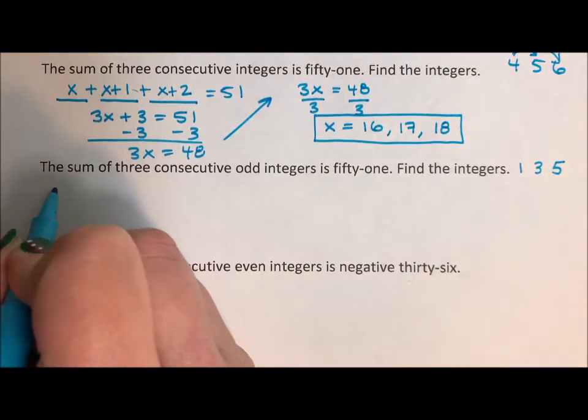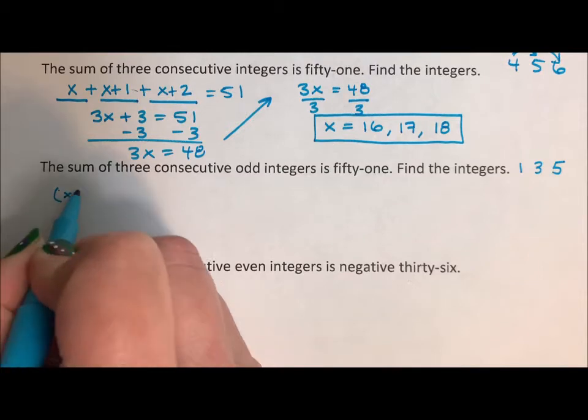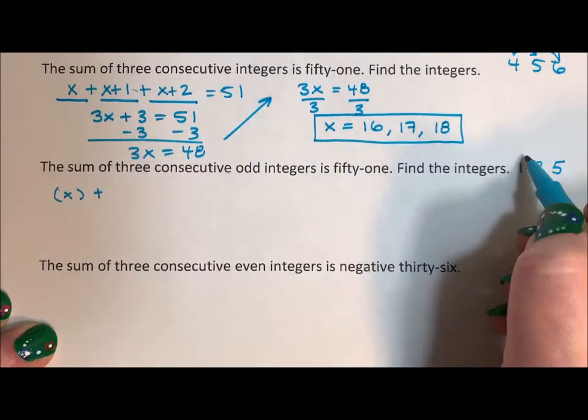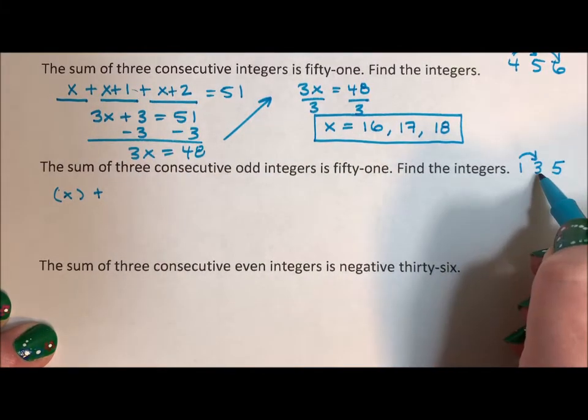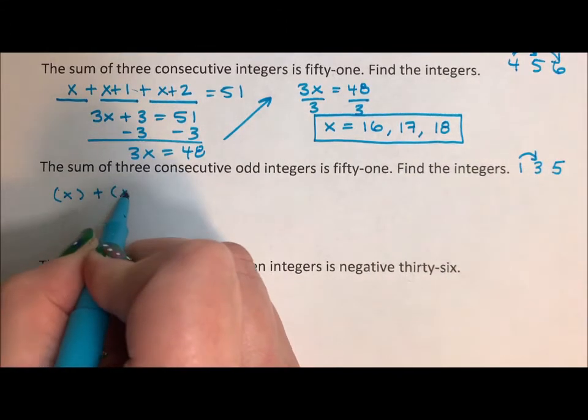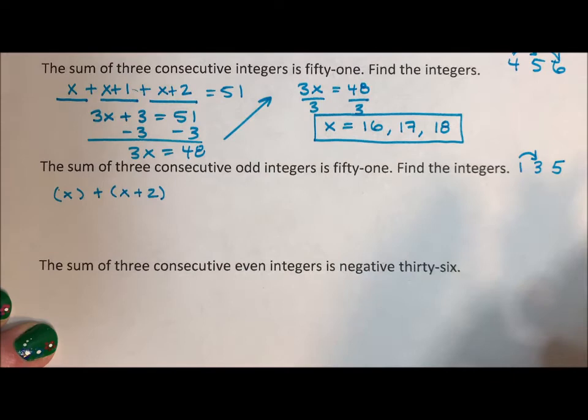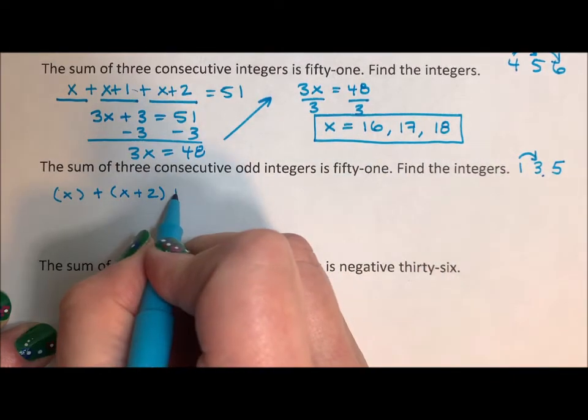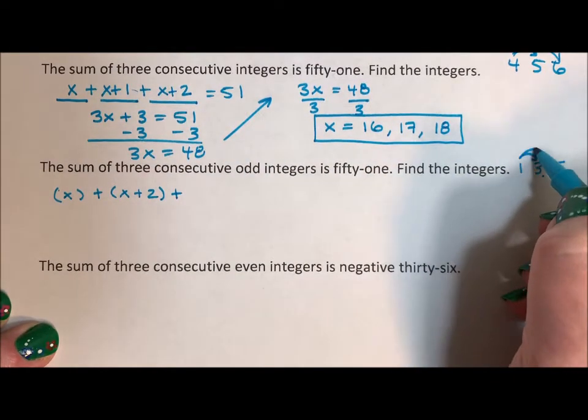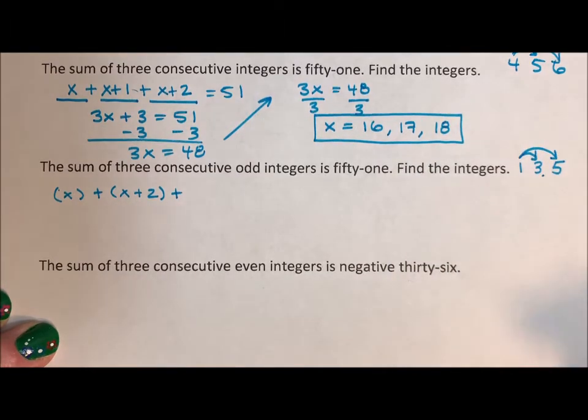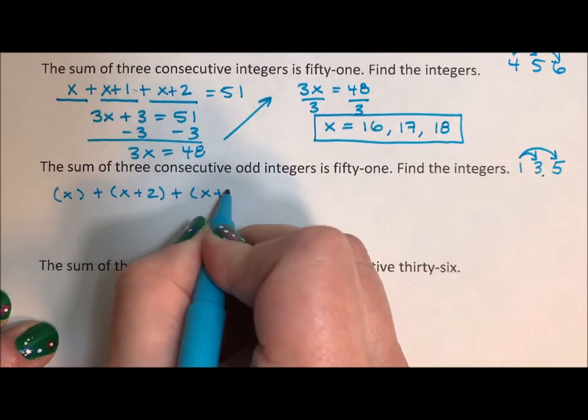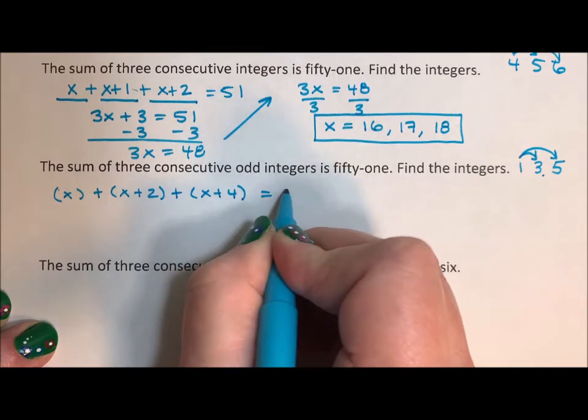So again, if my first integer is x, to get from one to three, I'm adding two. One plus two is three. So that would be x plus two, because that's how I get from one to three. Well, again, I have to start at one to get to five. So one to five, I'm adding four. So x plus four to get to 51.